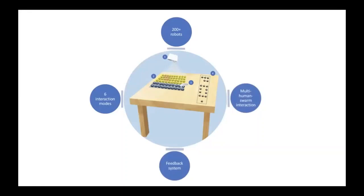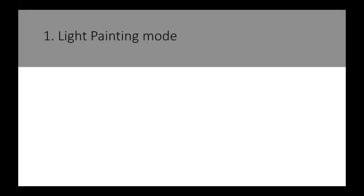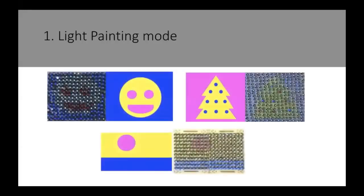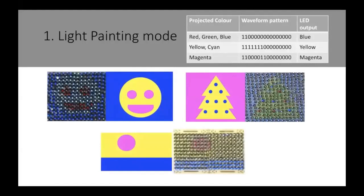Now I'll present the six interaction modes — the painting modes. The first is light painting mode, where the robots replicate the image projected onto them via the projector. The robots are able to distinguish between three different color groups, because their ambient light sensor gives off different waveform patterns whenever it detects one of those colors.